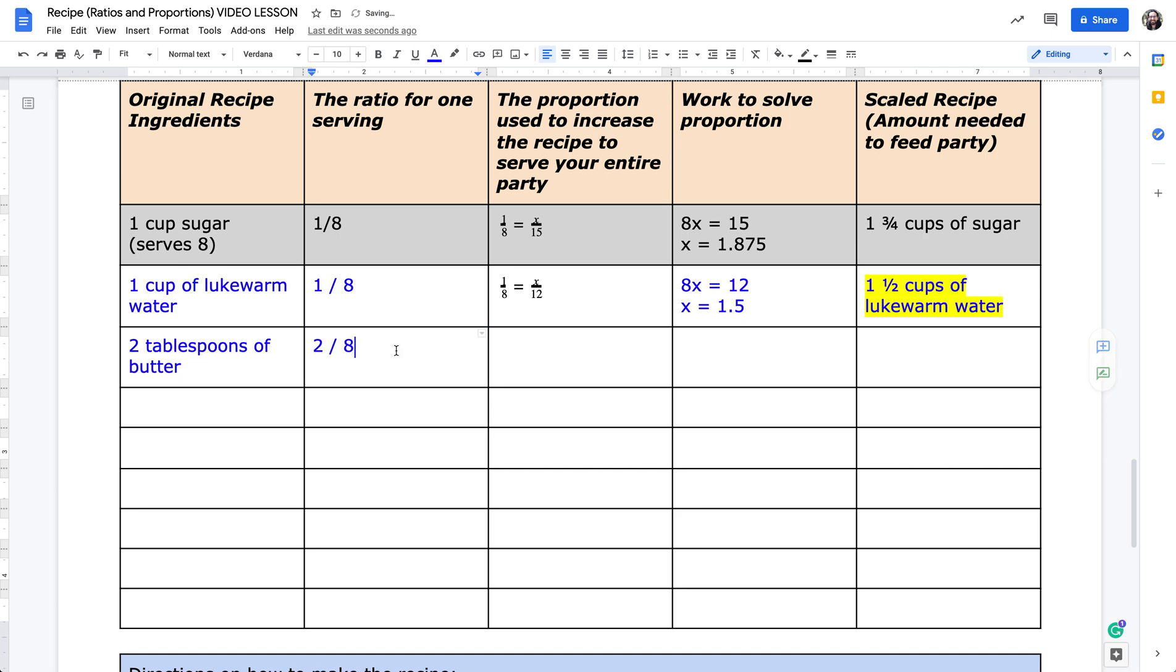This means my ratio is 2 to 8. That means 2 tablespoons of butter for 8 servings. So when I write my proportion, that is 2 tablespoons of butter for 8 servings is equal to x tablespoons of butter for 12 servings. Let's follow the same process of cross multiplying: 8 times x is 8x, 2 times 12 is 24. Divide both sides by 8, so 24 divided by 8 is equal to 3. Therefore, I need 3 tablespoons of butter for my adjusted recipe.